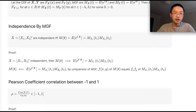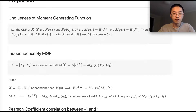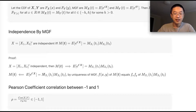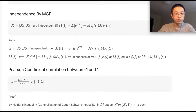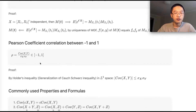The other direction: if you can write a moment generating function as a product, then by the uniqueness of moment generating functions — the theorem mentioned earlier — we know that if the MGF can be written as a product, then X₁ and X₂ are actually independent. So that's very easy to prove.